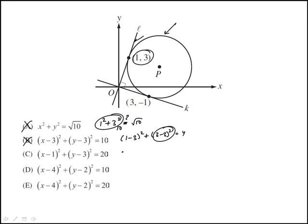And then this would be (1-1)² + (3-3)² = 20. That's actually 0 plus 0. And then we're left with that one.